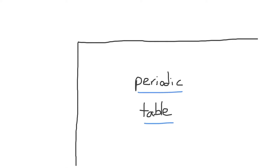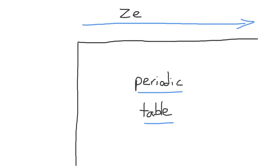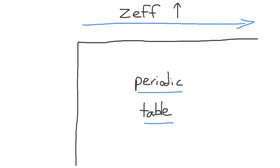The first trend we will talk about is as we move from left to right across a period. A period is a row within the periodic table. As we move from the left to the right across this period, the effective nuclear charge, or Z effective, will increase or go up. Let's talk about why that is — why does the effective nuclear charge increase across a period?